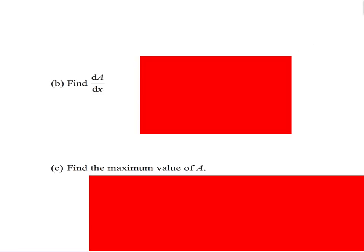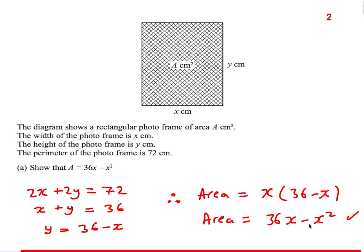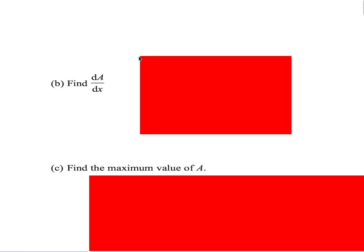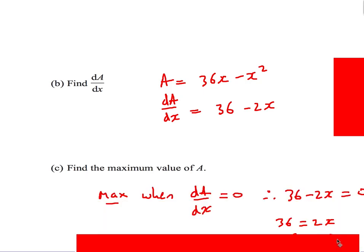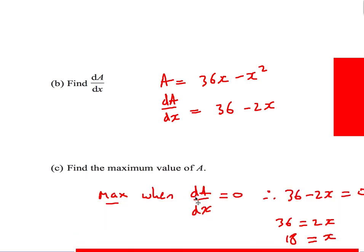We've probably done the difficult part. Differentiating the area 36x - x²: 36x differentiates to 36, and -x² brings the power down and reduces by 1 to give -2x. So dA/dx = 36 - 2x. Next: find the maximum value. At any maximum or minimum the gradient equals 0, so 36 - 2x = 0, giving 36 = 2x, therefore x = 18.